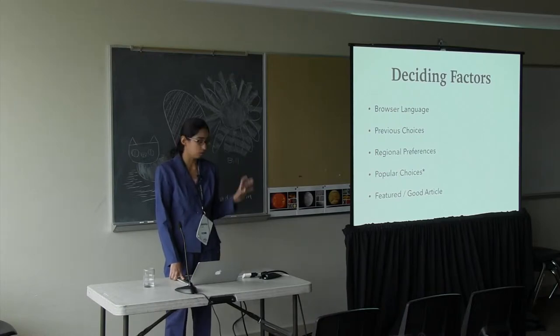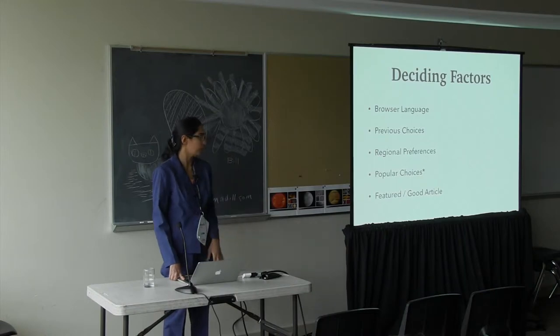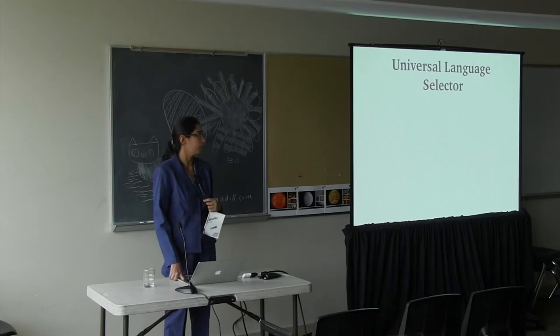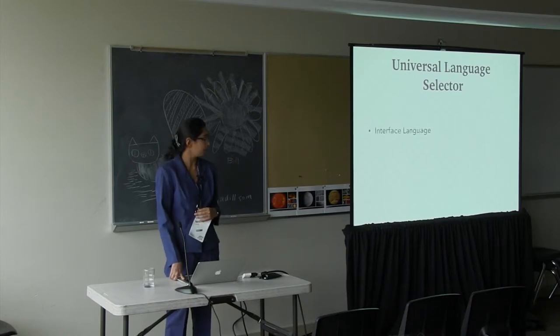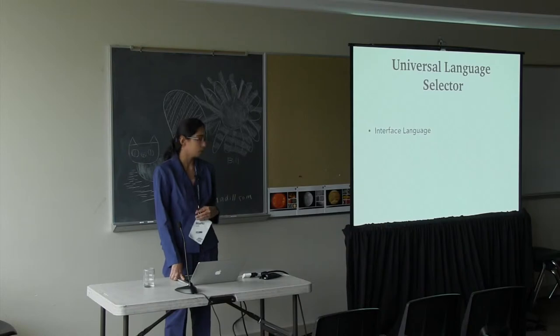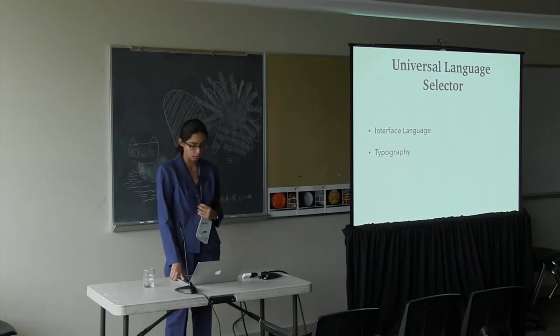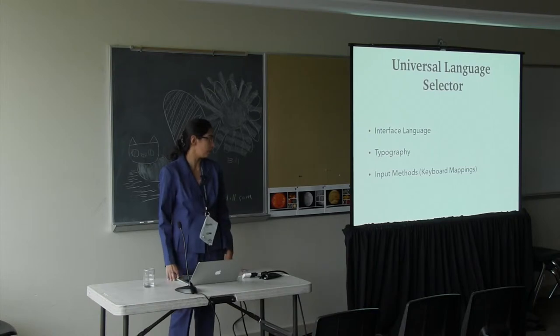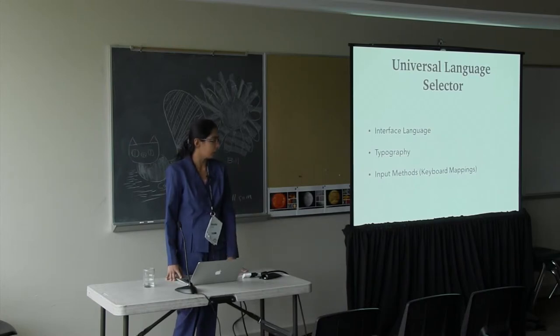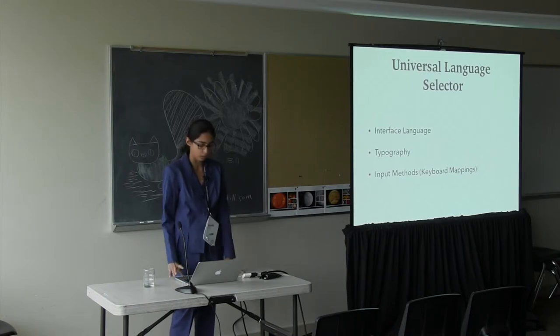Let's discuss a bit about the compact language selector box. It comes from something called the universal language selector. The universal language selector was developed by the language engineering team at Wikimedia Foundation. It serves three important purposes. First, the interface language - you can choose the language of your menus and labels using the ULS. Secondly, the typography - what choice of font you want to see. And lastly, the input methods or keyboard mappings. You can type in a language that is not supported by your keyboard. It provides a virtual keyboard for typing in languages that you don't have available on your keyboard.